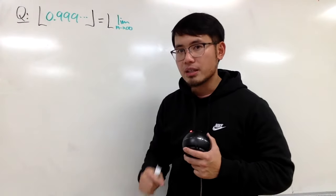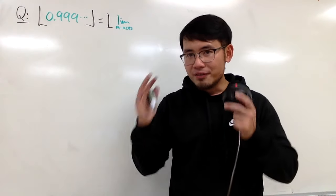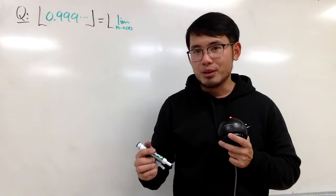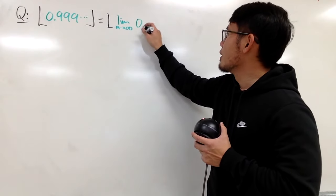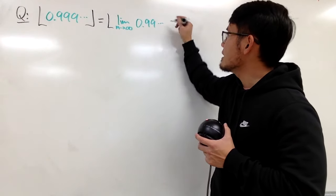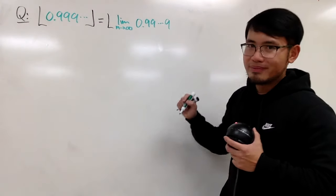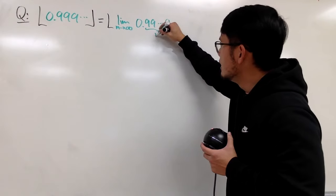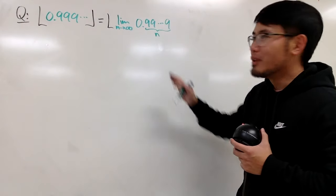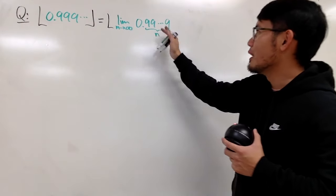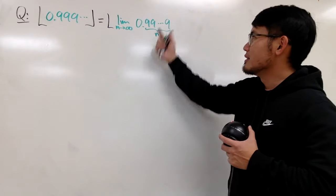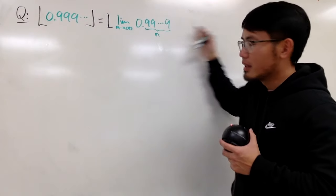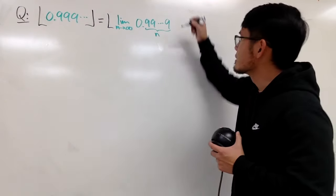When you have infinite amount of 9s, you first have to have finite amount of 9s. How many though? N of them. So we can just write it down as 0.99 dot dot dot, and then you stop right here. And you are going to indicate you have n 9s like this. And usually, when you write this down, people know you are talking about you have n 9s here, and then you take n to be infinity, then you have infinite amount of 9s.